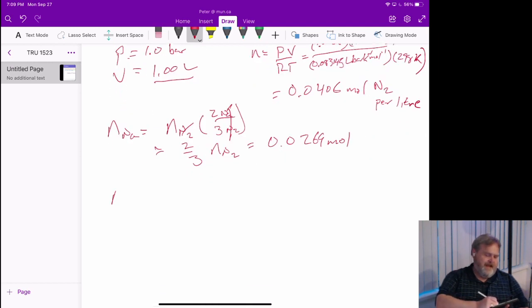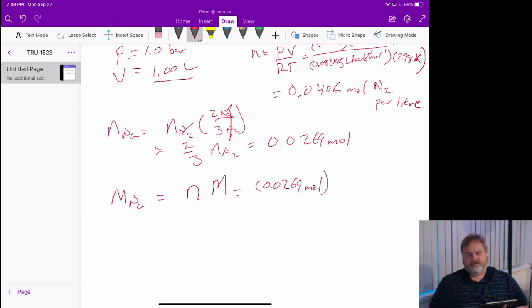We can say the mass of sodium equals the moles of sodium times the molar mass. That's going to be 0.0269 moles times the molar mass of sodium, let's say 23.98 grams per mole.